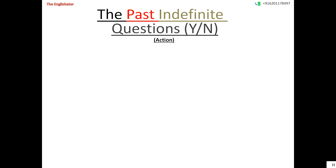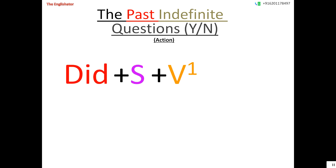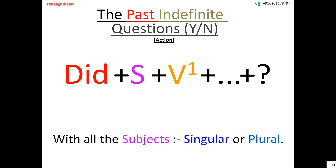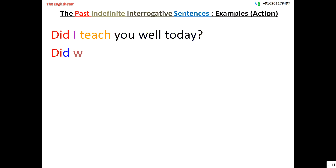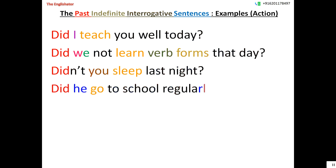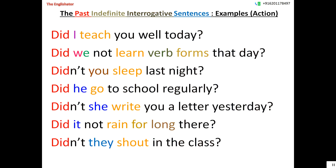Now let us see how to make yes/no type questions in this tense. You use auxiliary verb 'did' before the subject, then the V1 form of the main verb, plus additional words if required. Don't forget the question mark. This formula is valid with all subjects, singular or plural. Examples: Did I teach you well today? Did we not learn verb forms that day? Didn't you sleep last night? Did he go to school regularly? Didn't she write you a letter yesterday? Did it not rain for long? Didn't they shout in the class?